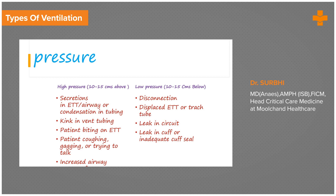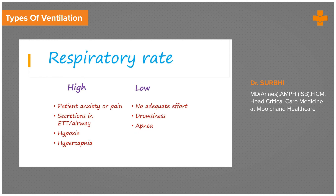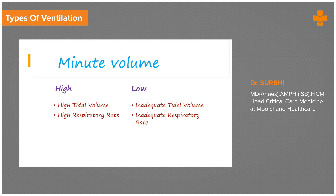High pressure alarms are caused by secretions or a block in the airway, a kink in the ventilator tubing, the patient biting, coughing, or increased airway pressures due to bronchospasm. Low pressure alarms are usually due to disconnection, a leak in the circuit, a leak in the cuff, or a displaced endotracheal tube. High tidal volume and high respiratory rate alarms are also important to monitor.